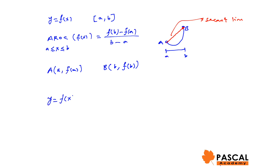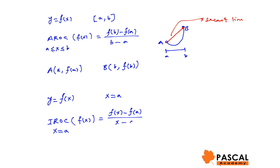Estimating the instantaneous rate of change of y equals f(x) at x equals a: the rate of change of a function at a point is called the instantaneous rate of change, denoted IROC of f(x) at x equals a. It equals f(x) minus f(a) over x minus a, approximately, when x is close to a. Using this formula we estimate the instantaneous rate of change of a function at a point.